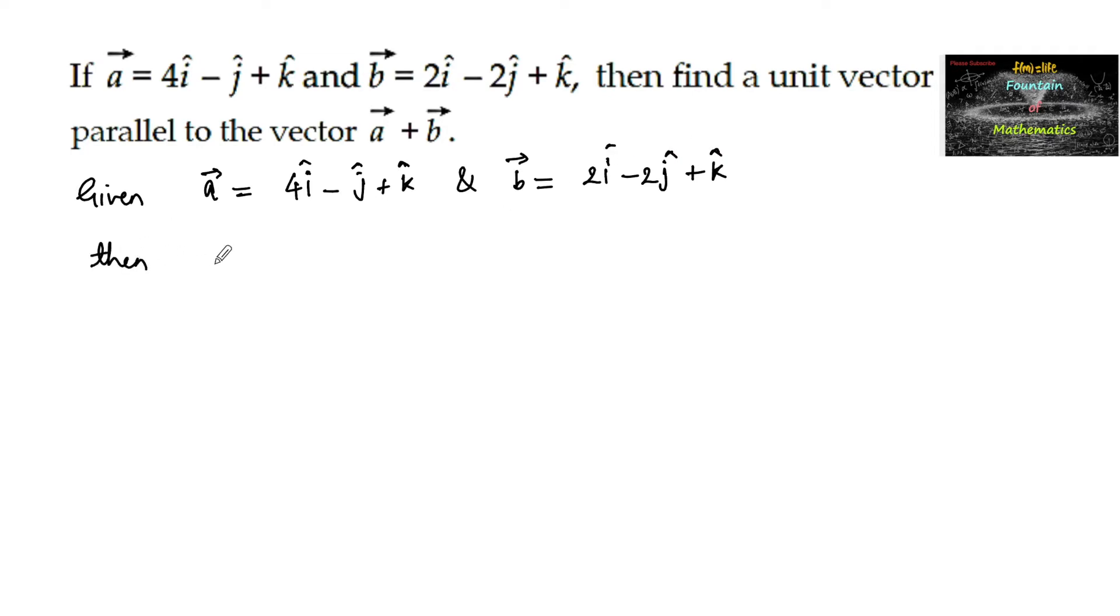Then a plus b is equal to the sum of the two vectors: 4 plus 2 of i, minus 1 minus 2 of j, and 1 plus 1 of k, so which is equal to 6i minus 3j plus 2k.